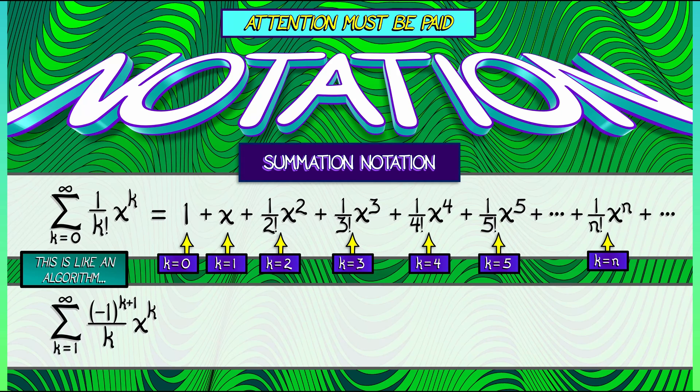Well, follow the instructions. This time, begin with k equals 1, substitute that into the expression. I get negative 1 to the 2 divided by 1 times x to the 1. That simplifies to x. The k equals 2 term is what? I have negative 1 cubed divided by 2 times x squared. That is, minus 1 half x squared.